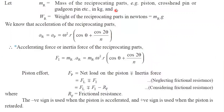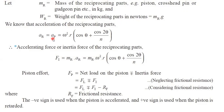So first thing is MR. MR is nothing but the mass of the reciprocating parts — reciprocating parts like piston and cross head pin or joint pin — in terms of kg. WR is the weight of the reciprocating part in terms of Newton, that is mass into gravity. AR is the acceleration of the reciprocating part, which is nothing but the acceleration of the piston. We already derived the formula in the previous video.